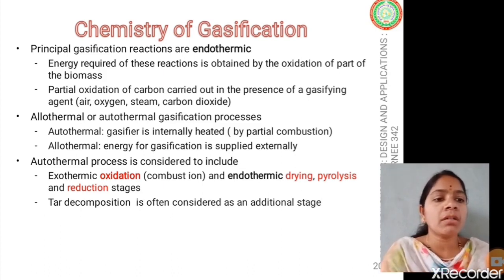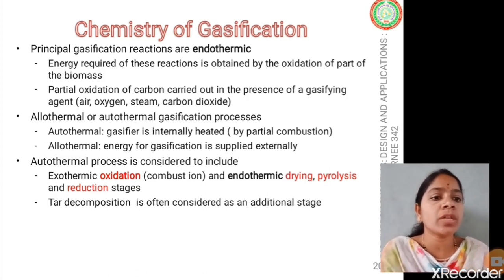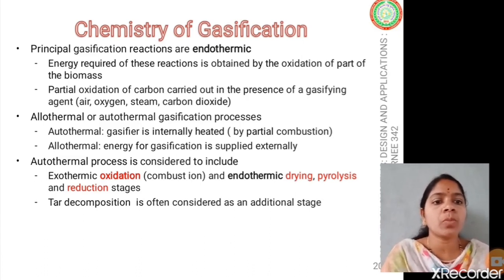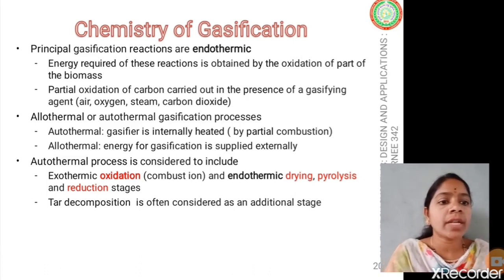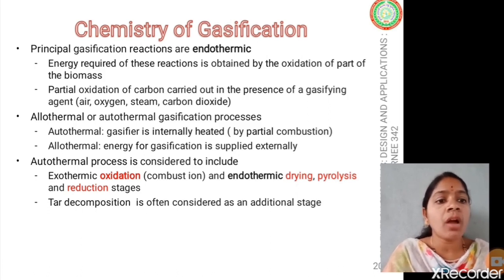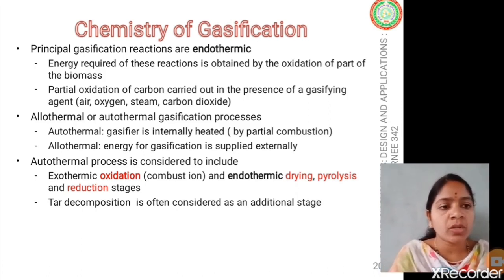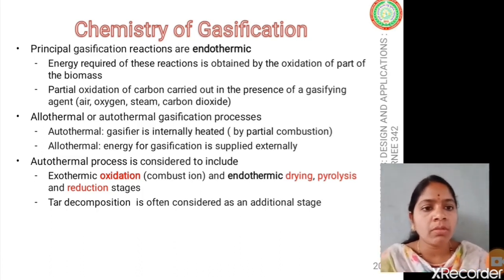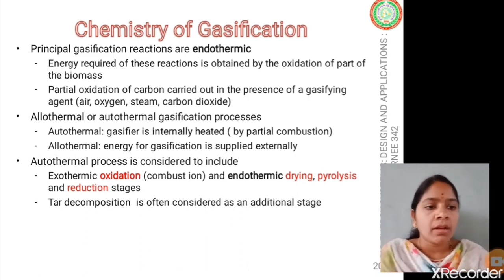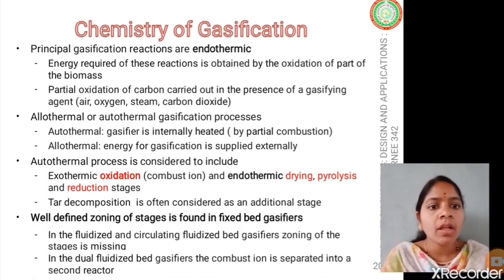The autothermal process includes the exothermic oxidation, which is a combustion process taking place in the gasifier. The remaining reactions are endothermic, which consume the heat released by the oxidation process. That heat is utilized to carry out the drying, pyrolysis, and reduction stages. The decomposition stage is sometimes considered an additional stage. After pyrolysis, the gas is composed of a significant proportion of tar, which must be condensed or volatilized to form combustible gases.